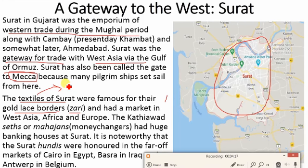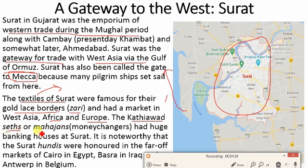Trade was very prosperous here. Goods were exported to different continents — Africa, Europe, and West Asia. The traders, who were also called mahajans, issued hundis. Let me explain what a hundi is.